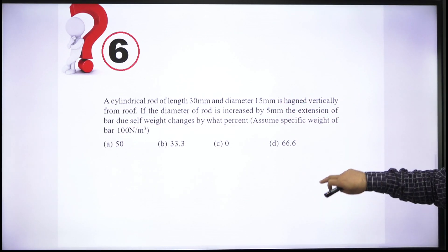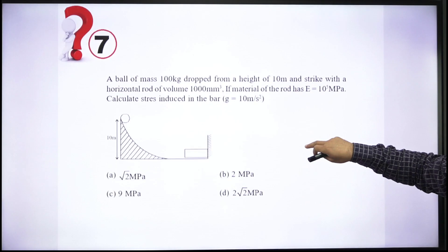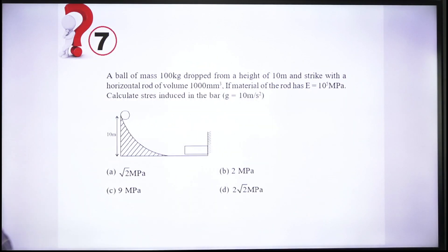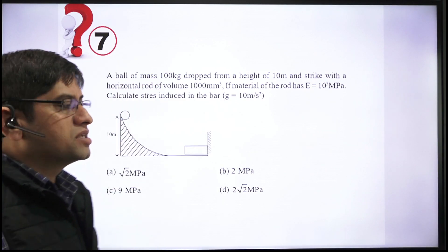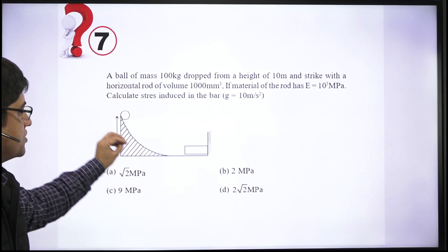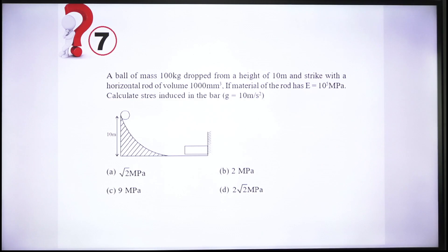Next question: A ball of mass 100 kg is dropped from a height of 10 meters and it hits horizontally the rod of volume 1000 mm cube. If the material of the rod has modulus of elasticity as 10 raised to power 5 megapascal, you have to tell the stress induced in the bar. Acceleration due to gravity is given as 10 meter per second square. This is a ball which is hitting the bar and you have to tell what is the stress induced in the bar. Very good question here.